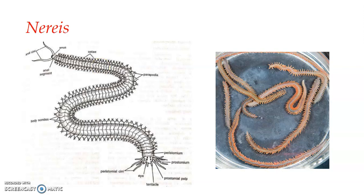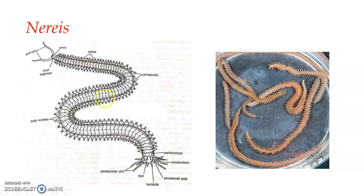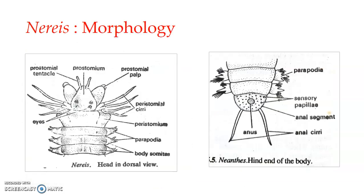The trunk region comprises the entire body except the head at the anterior end and the pygidium at the posterior end. The last segment is the pygidium, also known as the anal segment or tail segment. The pygidium bears a terminal anus and a pair of long anal cirri — long filamentous ventral appendages — and several minute sensory papillae. Parapodia are absent in the pygidium.